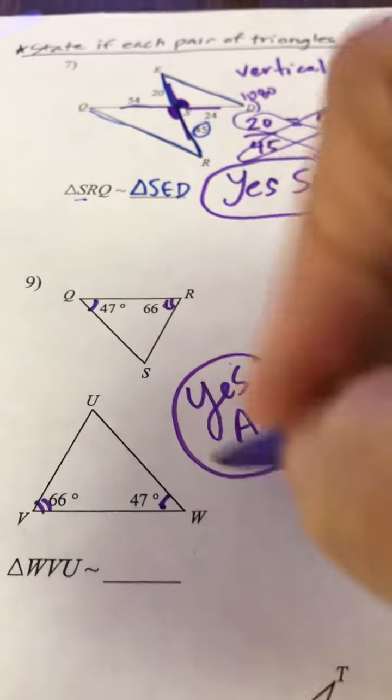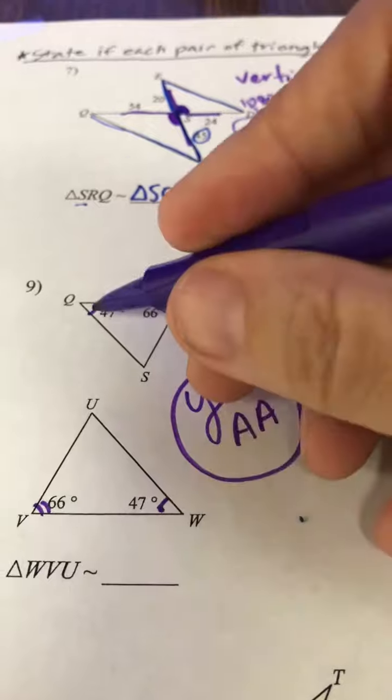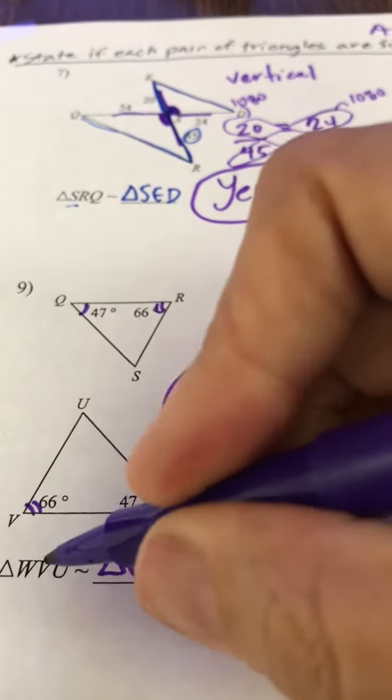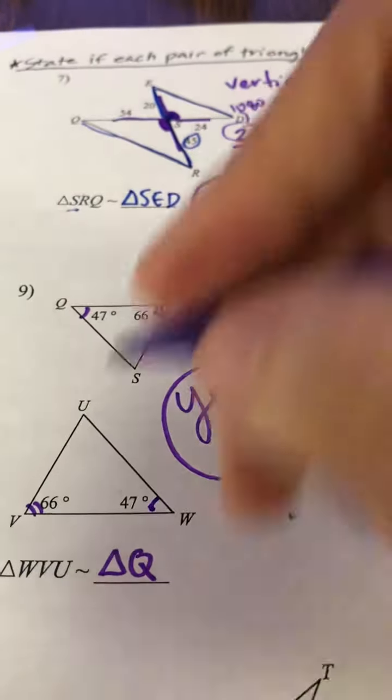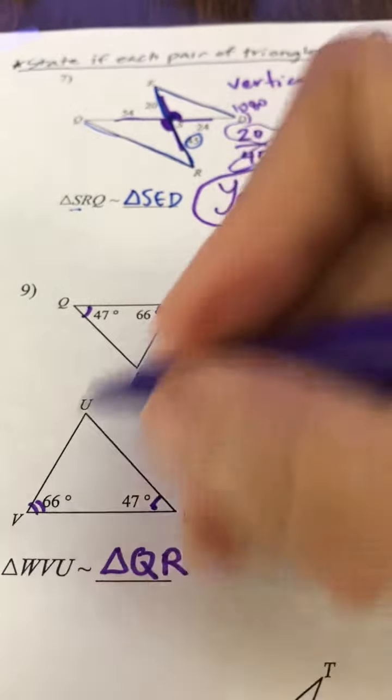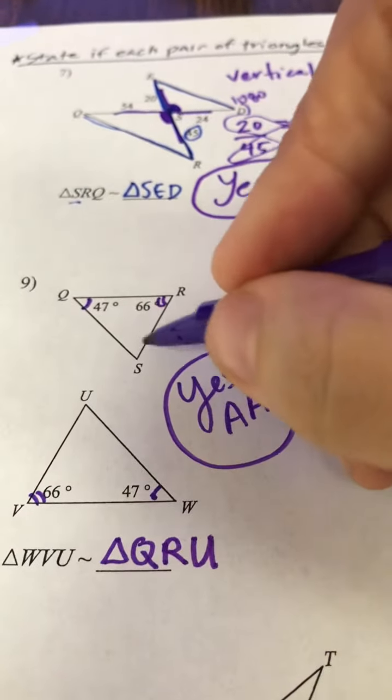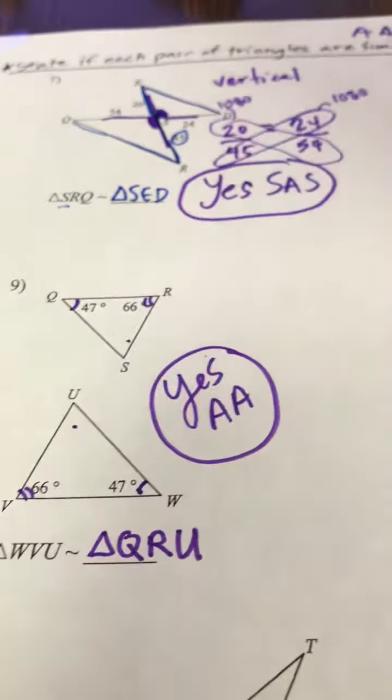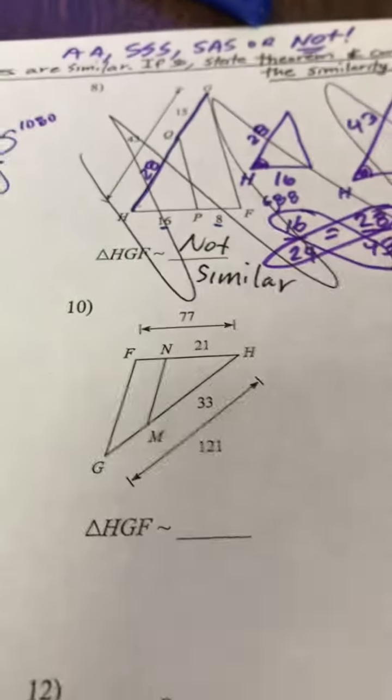Now let's name them. I put one necklace on W and one necklace on Q because they're both 47. And V, I put two necklaces on V and on R because they're both 66. And we could solve for this missing angle, but we don't need to. These angles are going to be equal to each other because of the triangle sum theorem.